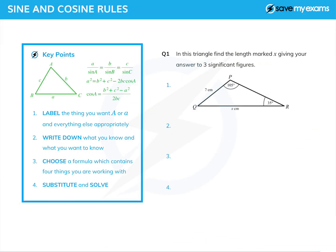In this tutorial, we are looking at trigonometry with non-right angle triangles. We're going to use the sine and cosine rules. There's the sine rule, and here are two forms of the cosine rule, depending on whether I'm trying to find a side — that's the first one — or an angle — that's the second one. You need to learn these as a GCSE student.